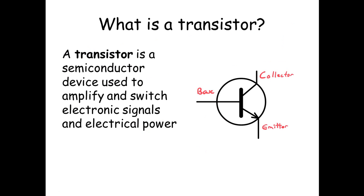A transistor is a semiconducting device used to amplify or switch electronic signals and electrical power. A transistor has three pins: the collector, the base, and the emitter.